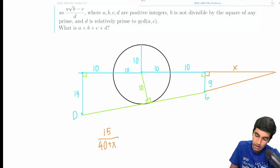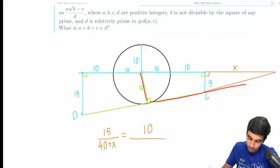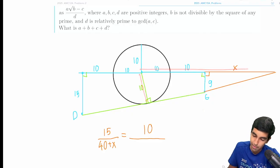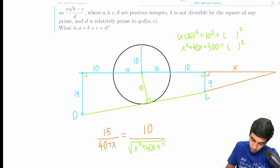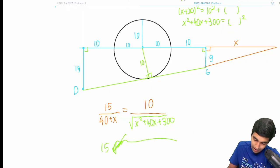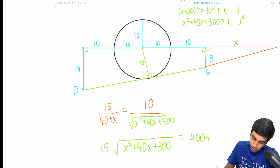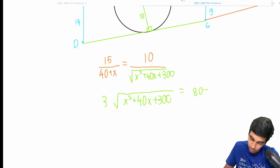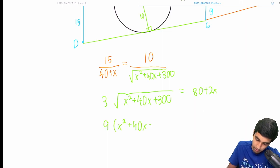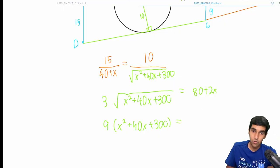Let's use short leg to long leg for similar triangles — that's computationally easier than short leg to hypotenuse. So that gives us: 15 over (40 plus x) equals 10 over the other leg. That other leg uses the Pythagorean theorem: (x + 20)² = 10² + something², so we get x² + 40x + 300 under a square root. We need to square both sides to eliminate that square root and get a quadratic.